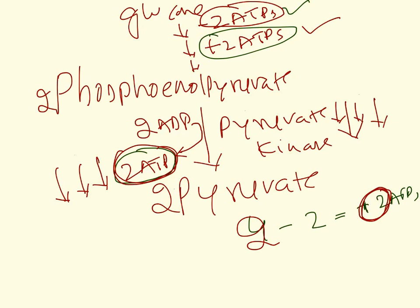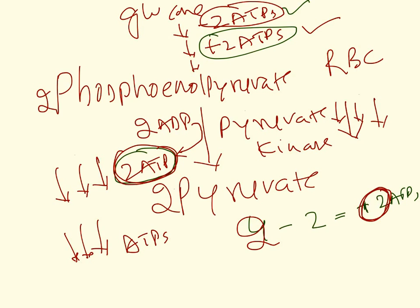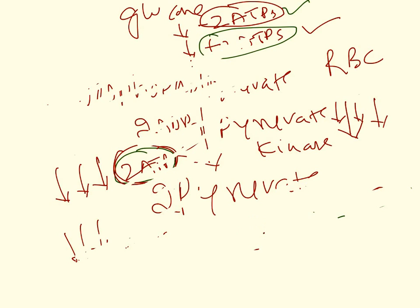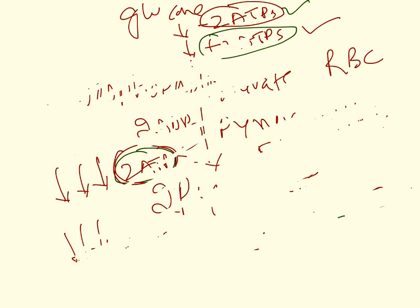In pyruvate kinase deficiency there will be an overall shortage of ATP in red blood cells. This especially affects red blood cells because other tissues can use fatty acids or ketone bodies for energy, but red blood cells cannot use any of these molecules — they depend only on glucose. So whenever pyruvate kinase is deficient, red blood cells won't be able to generate sufficient ATP for their needs, and the red blood cell won't be able to maintain its membrane integrity.